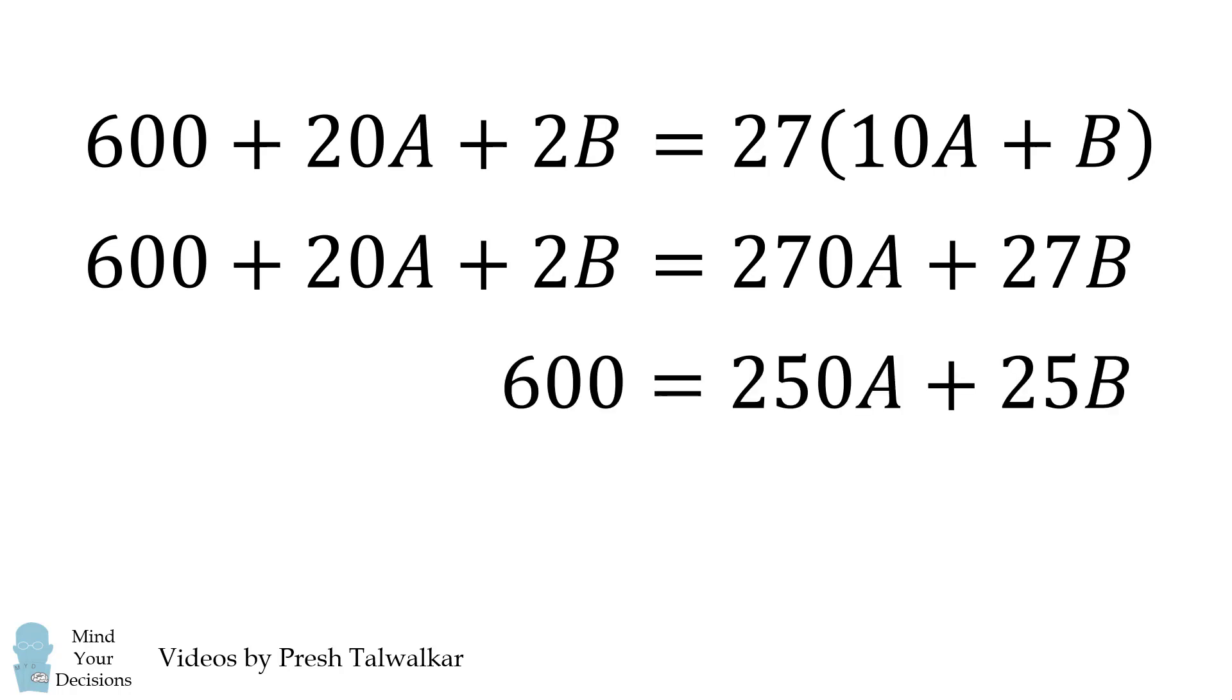We then divide both sides of this equation by 25, and we get 24 is equal to 10A plus B. But recall, 10A plus B is my original number. Therefore, my original number was equal to 24, and that's the answer.